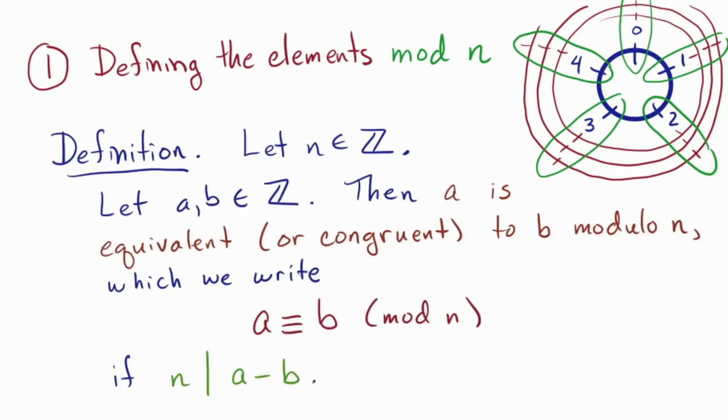Here's the definition. Let n be an integer. Let a and b be integers. Then a is equivalent, or sometimes one says congruent, to b modulo n, which we write a triple line b brackets mod n, if n divides the difference a minus b. Note that the vertical bar here is the verb divides. Okay, as always, upon meeting a new definition, let's test it. 8 and 3 are equivalent modulo 5, because 5 divides 8 minus 3. Okay, looks sound.